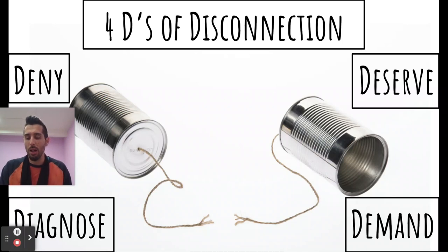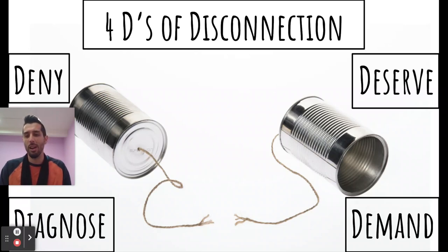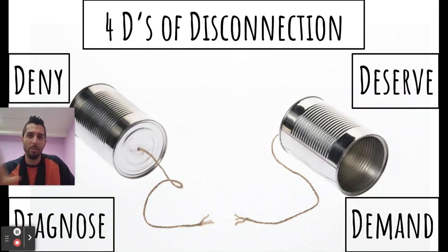Finally, we have demand. A demand is defined as a request that is partnered with the threat of punishment — it's not a request someone is free to decline. In an interpersonal setting, that can be telling someone to do something 'or else.' Whereas in systemic oppression, now we're looking at law enforcement or the might of the US Army and its imperial aggression. There are very few things more coercive than the threat to overthrow your nation's government — that's an extremely coercive and demanding way to disconnect from the needs of an entire people.